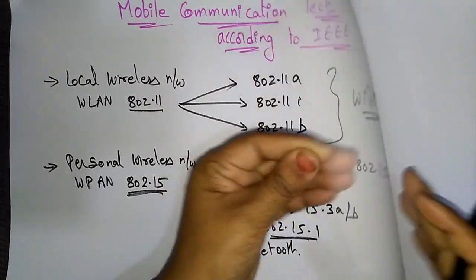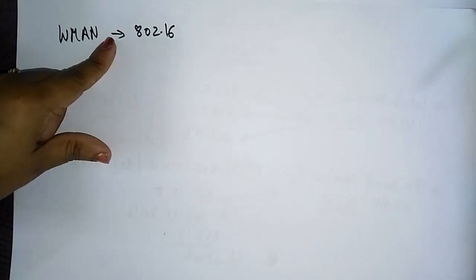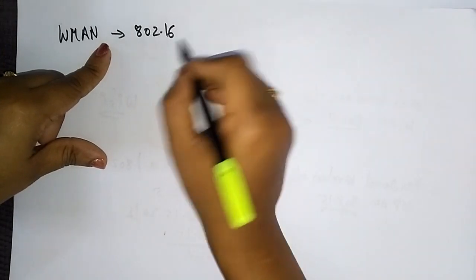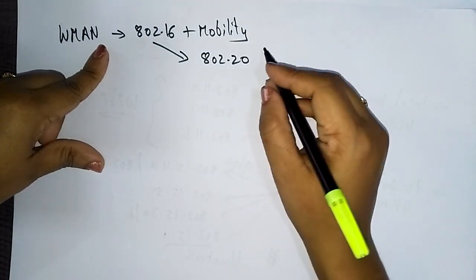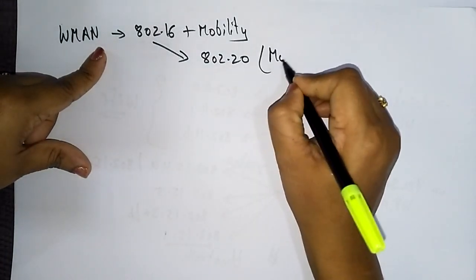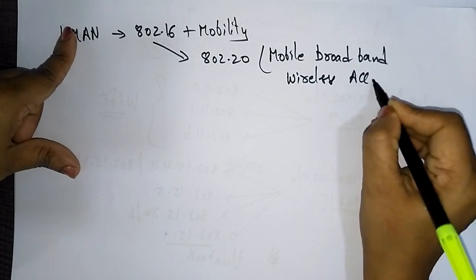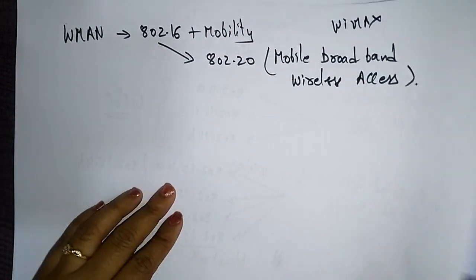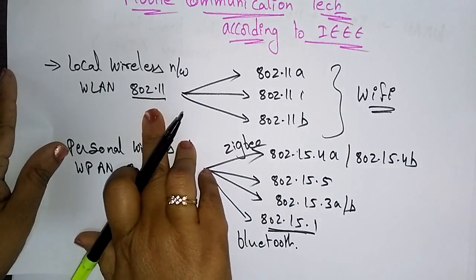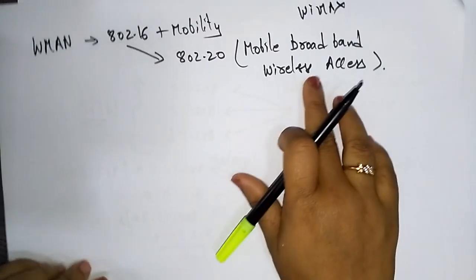If you take the wireless MAN, that is WiMAX — the wireless metropolitan area network — the standard is 802.16. This gives broadband wireless access plus mobility. And 802.20 is used for mobile broadband wireless access. So remember: 802.11 is Wi-Fi, 802.15 is personal wireless network, and 802.20 is mobile broadband wireless access.